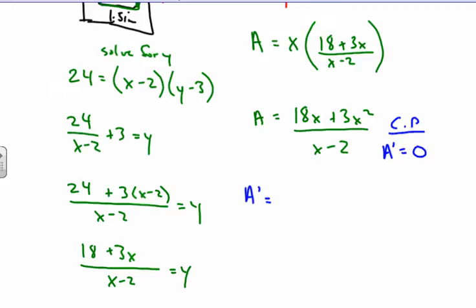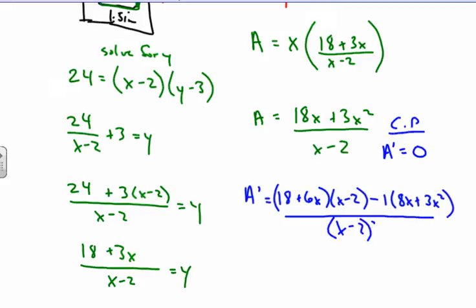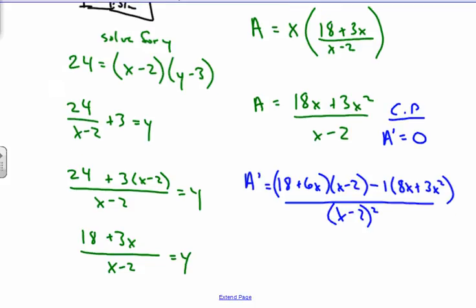From here, we're going to take, we have 18 plus 6x times the bottom, which is x minus 2, minus the derivative of the bottom, which is 1, times the top, which is 18x plus 3x squared, all over x minus 2 squared. Well, we're going to just take the numerator here and we're going to set it equal to 0.